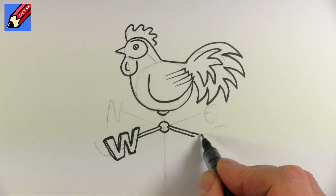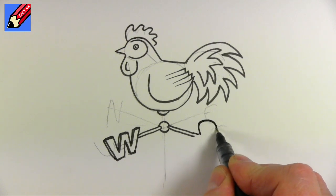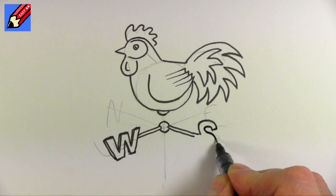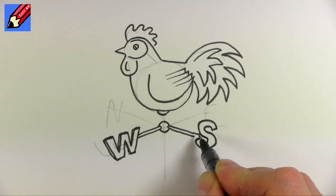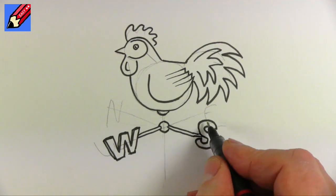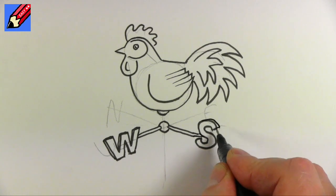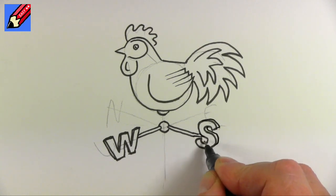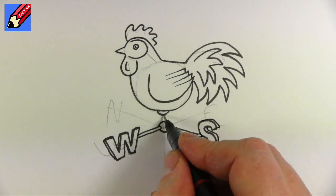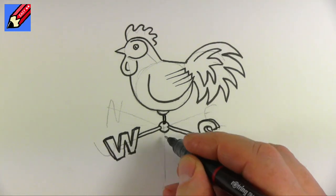And then here we want to have the S, which will be probably in about there, so we'll come around like that. We want this to look a little bit 3D as well because it's made out of metal. And then this can come down to there.